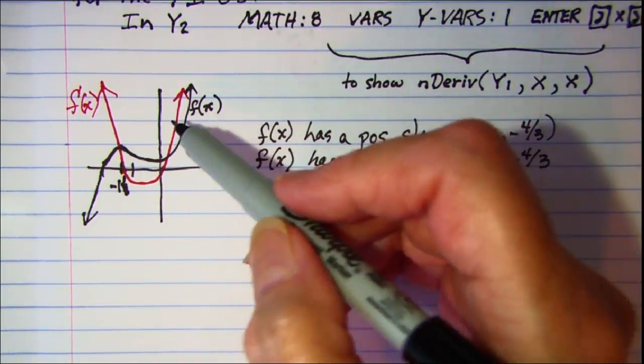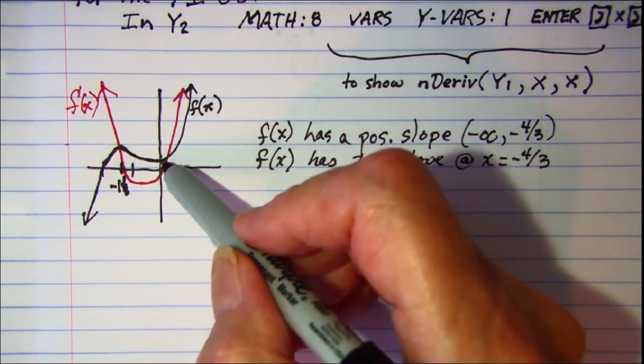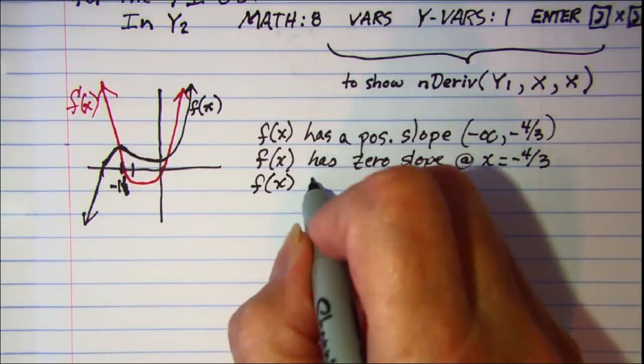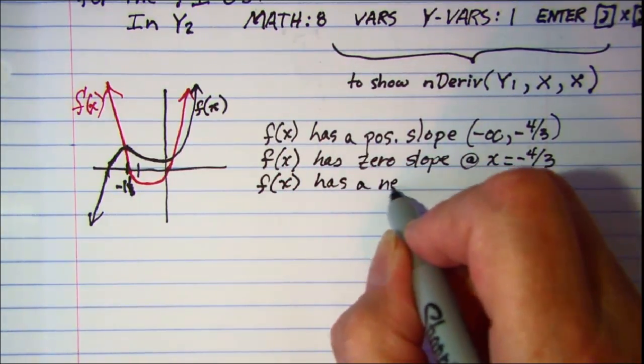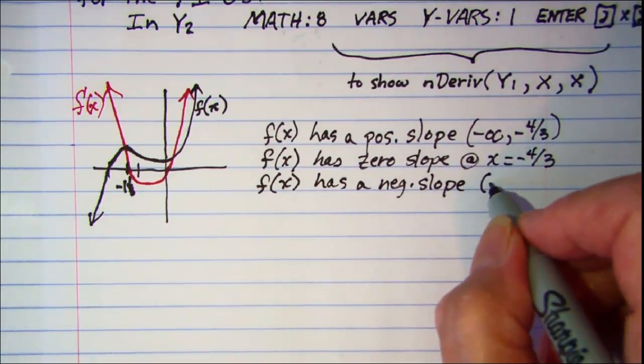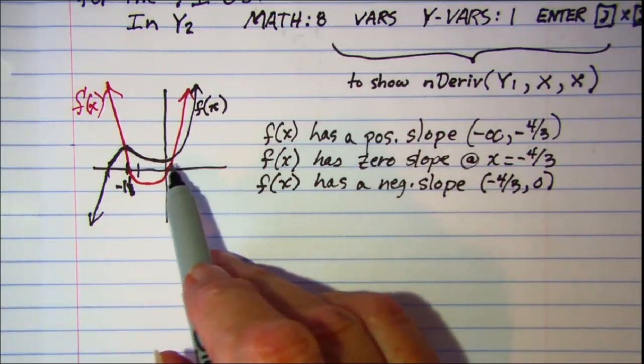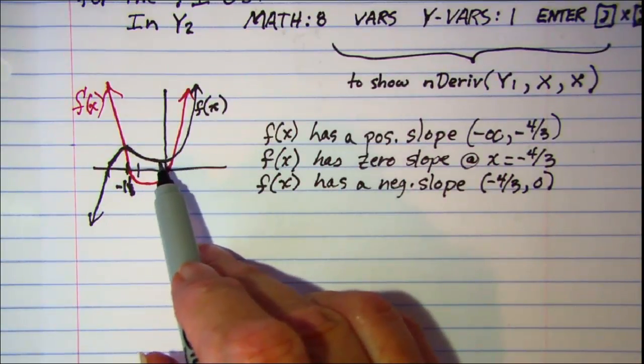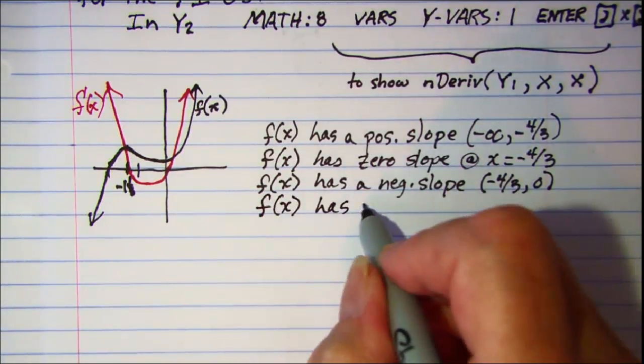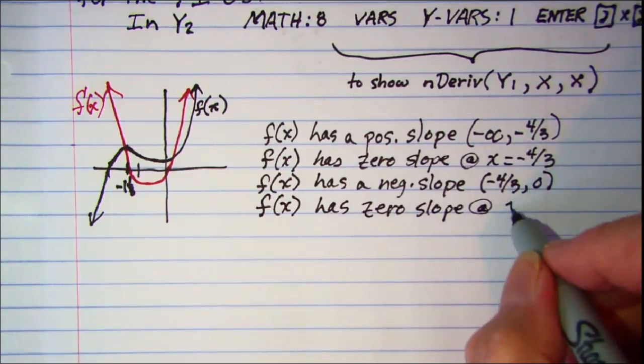At x equal negative 4 thirds. And then it starts going downhill until it reaches the origin here, or rather x equals zero. So it has a negative slope on the interval from negative 4 thirds to zero. And then again it has that horizontal tangent line, so zero slope at x equals zero.